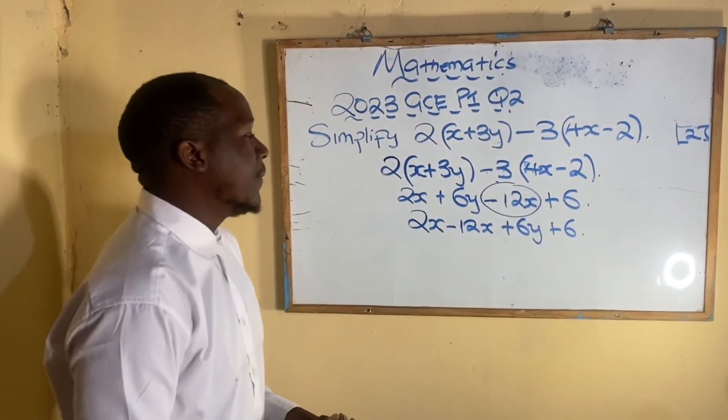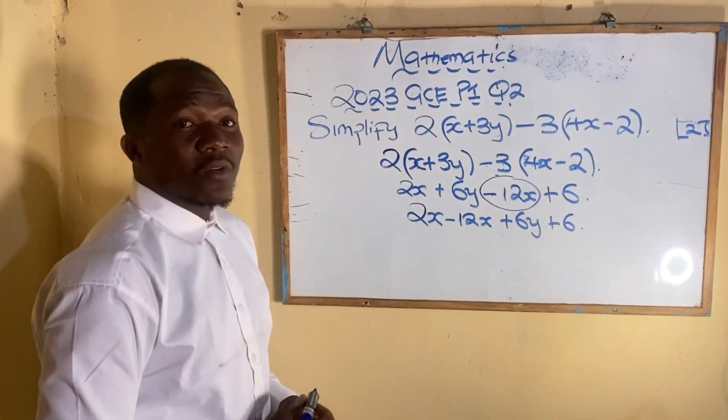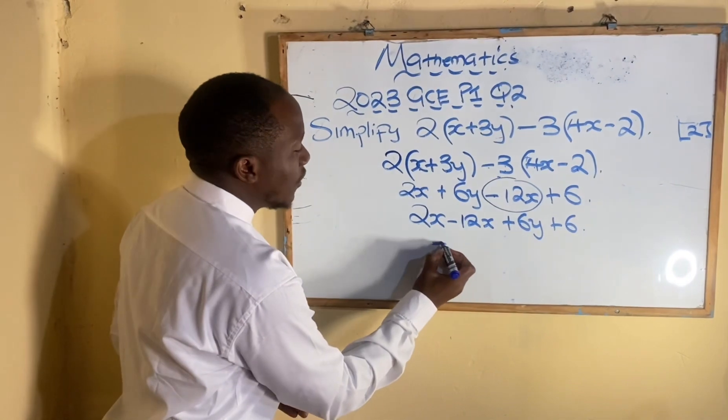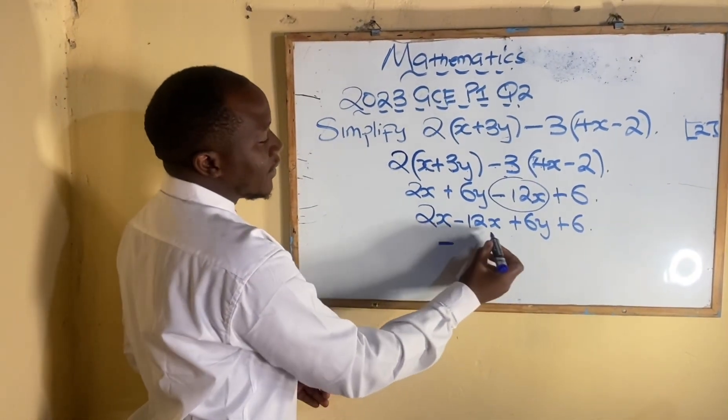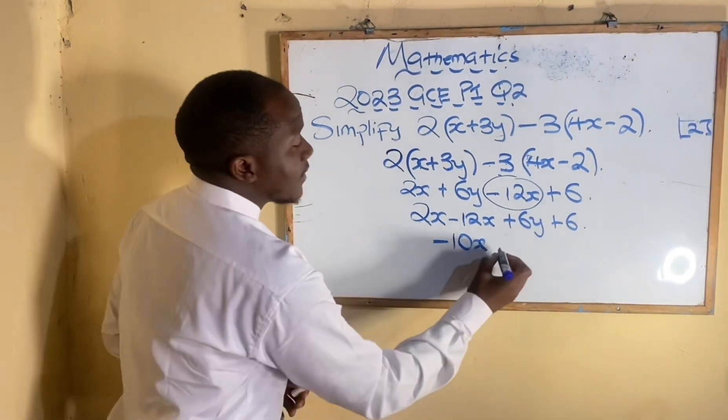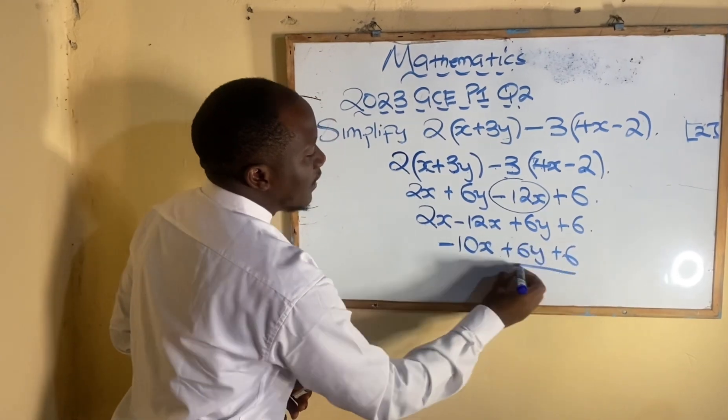Then 2 minus 12, or 2 cannot subtract, which shows the answer is going to be in a negative form. So this is going to be negative. 2x minus 12x is going to give us 10, and then what is common is x, and then plus 6y then plus 6. Having done that it means we've expanded and simplified the given expression to its simplest form.